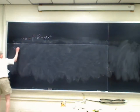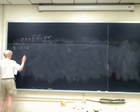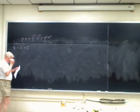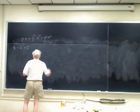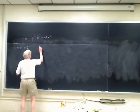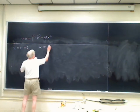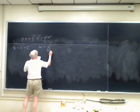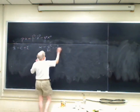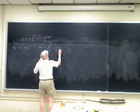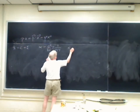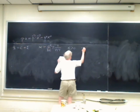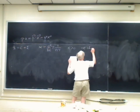Natural units means H-bar equals C equals one. There are actually many natural units, but the ones I'm going to use are: alpha equals E squared over H-bar C, that's 1 over 137 approximately. I'm taking E as positive, so minus E is the charge of the electron.